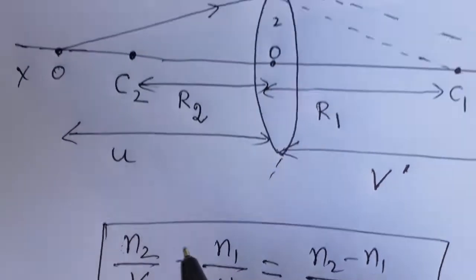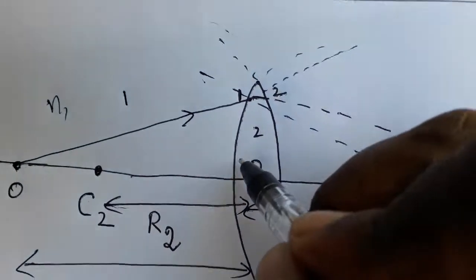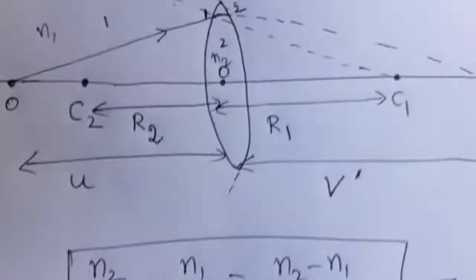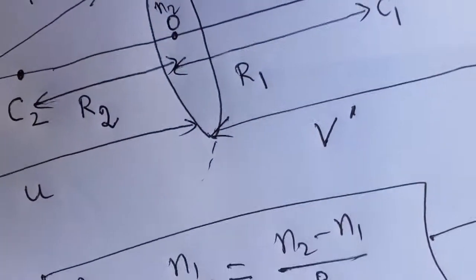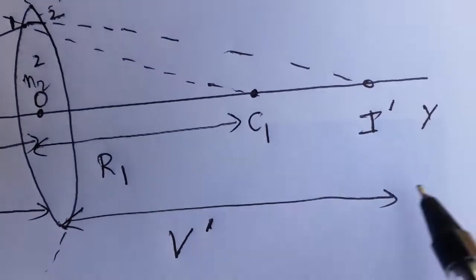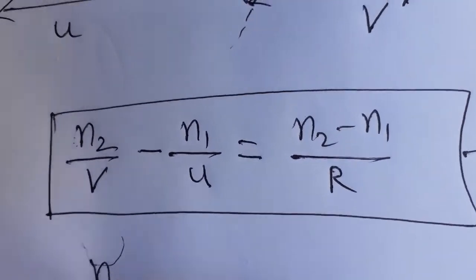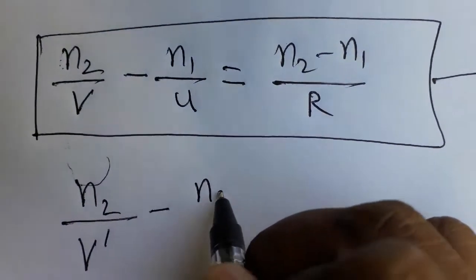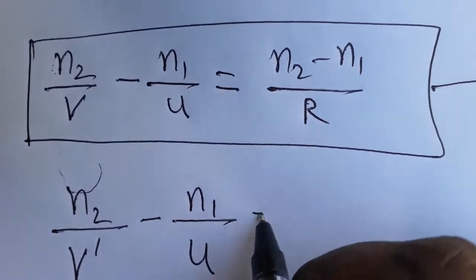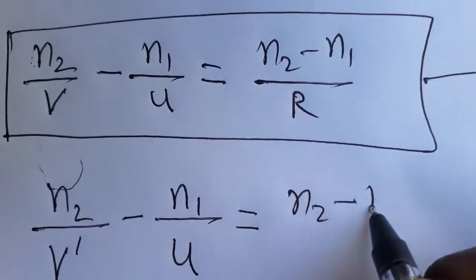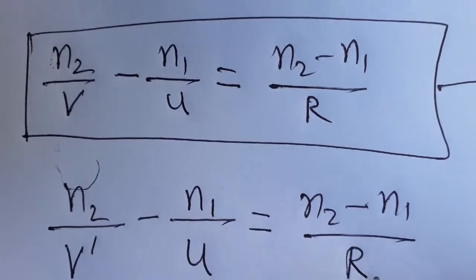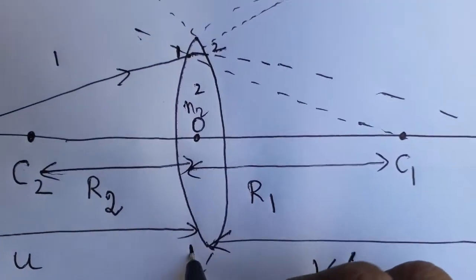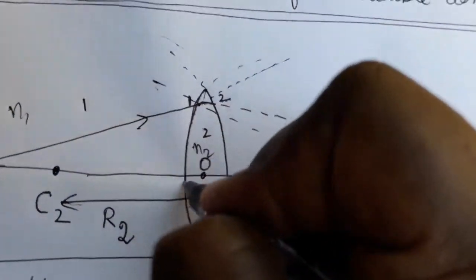For the first surface, the refractive index going in is n1 and coming out is n2. The image distance for the first surface is v', so the equation becomes: n2/v' − n1/u = (n2 − n1)/R1. This is Equation 1, for the first surface with radius of curvature R1.